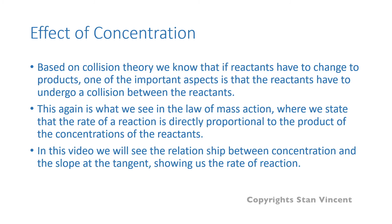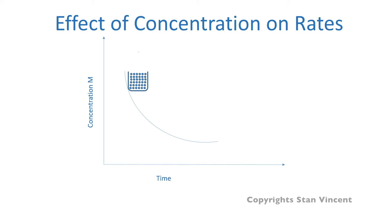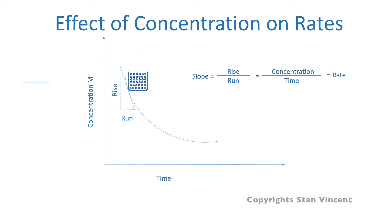In this video, we will be seeing the relationship between concentration and the slope of a tangent showing us the rate of a reaction. This is a graph of concentration versus time, and this is a change that we have seen with time. The point at which we are going to draw a tangent is represented by the highest concentration. The slope of this line, calculated by rise over run, will give us the rate of the reaction. Rise is concentration, which is moles per liter, and run is time. So concentration over time is rate. Every time we determine the slope of a tangent, we are determining the rate of a reaction.